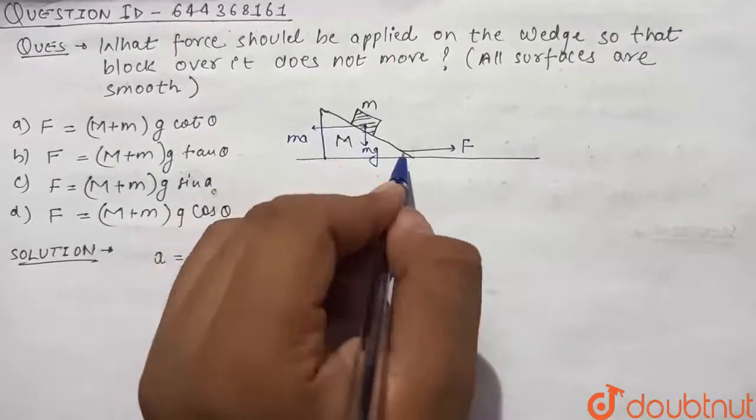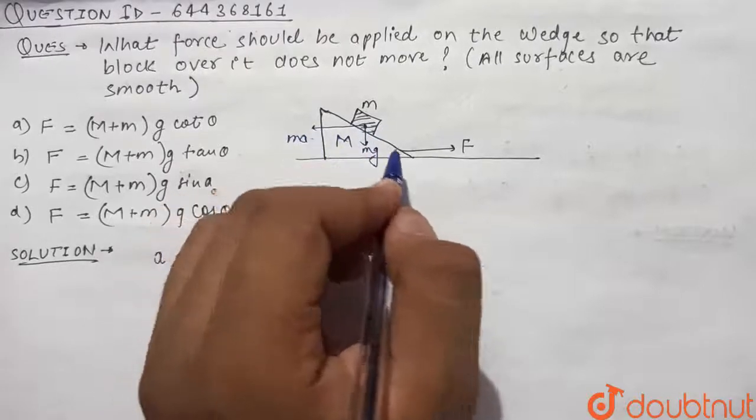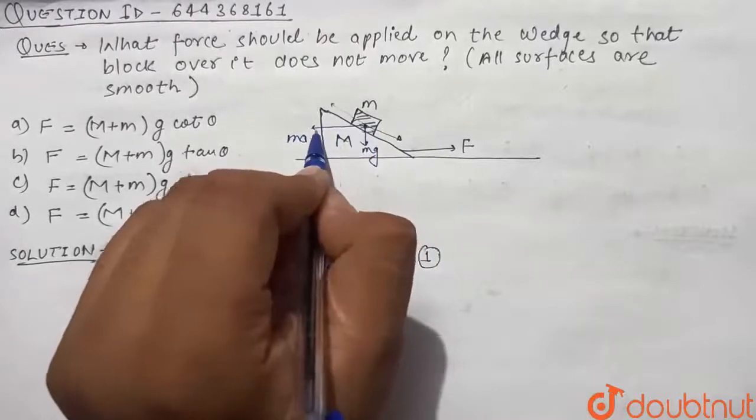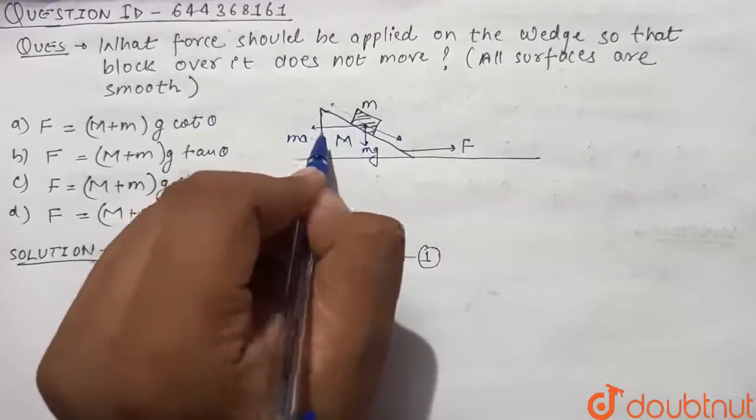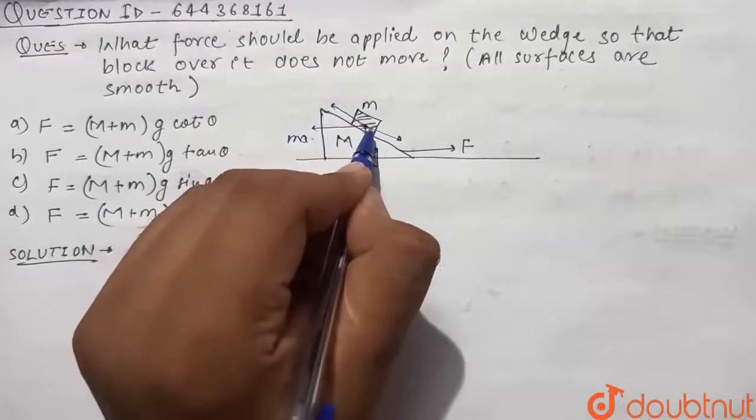So pseudo force ma will act on the block towards left side. Now if the block does not have to move, then the component of pseudo force towards upside should be equal to the component of weight towards downside.